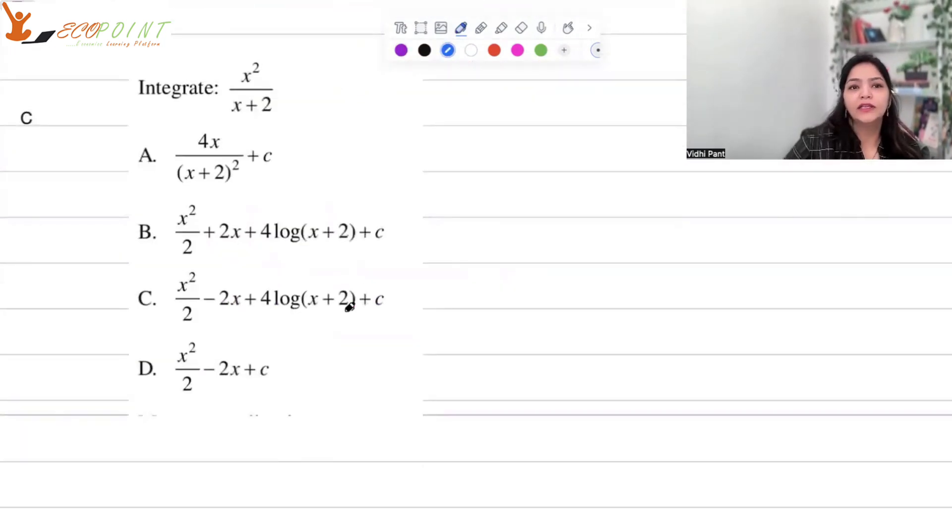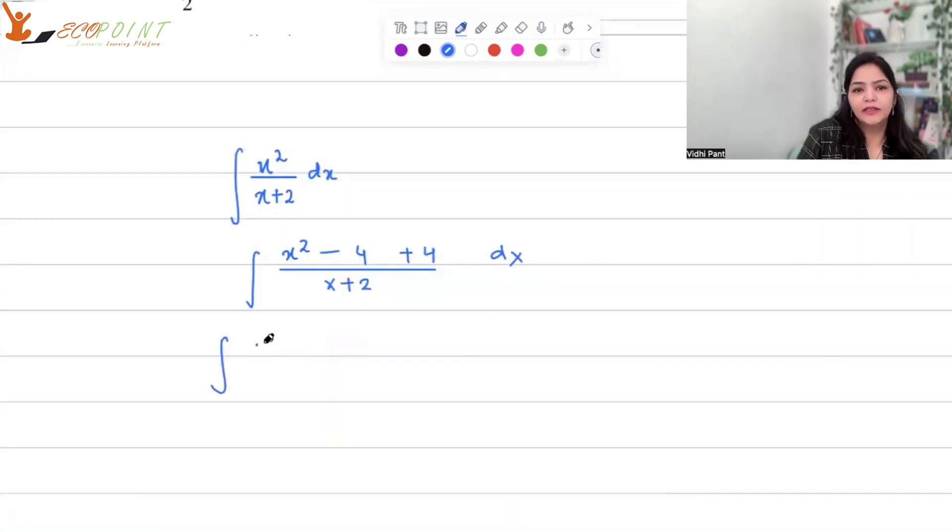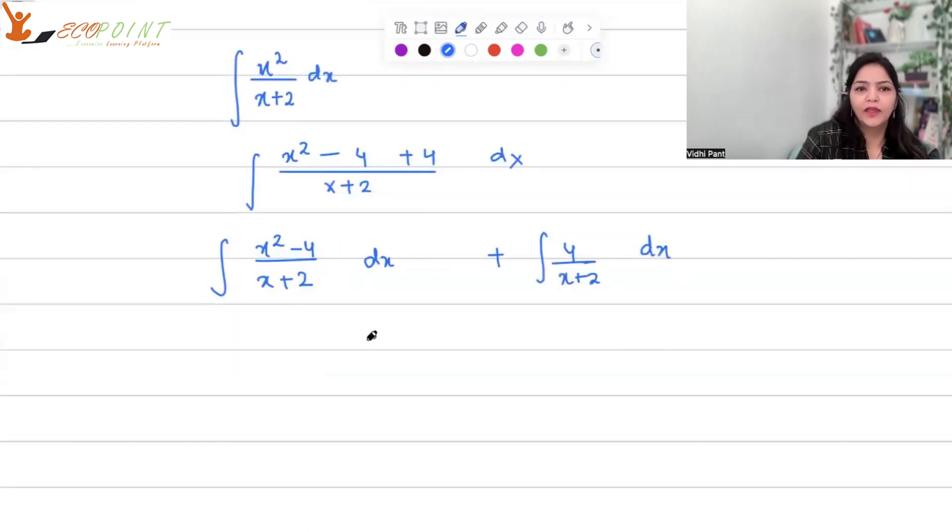Last question for today, integrate x square upon x plus 2. We have to integrate x square upon x plus 2. It's an indefinite integral. So what you can do here is you can add and subtract 4. Once you do that, you will be able to create a square minus b square. I will break this integral: x square minus 4 upon x plus 2 dx, and 4 upon x plus 2 dx alongside.